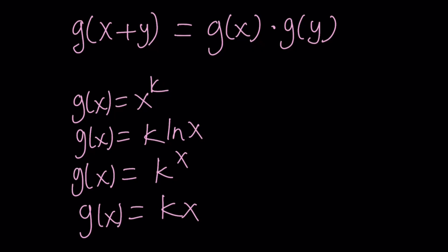They basically work like addition to addition, addition to multiplication, multiplication to addition, and multiplication to multiplication. Okay. Which one is it? You can test all of these, and you're going to realize the solution is one of these. But which one do you think it is? First of all, start with the power. If g of x is x to the k, then g of x plus y is just going to be x plus y to the k. And is that equal to x to the k times y to the k? No way. This is not going to work.